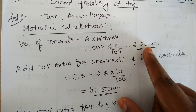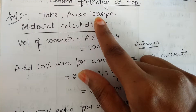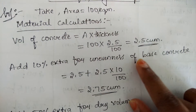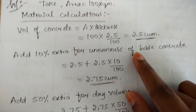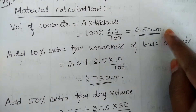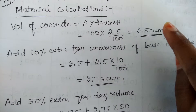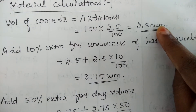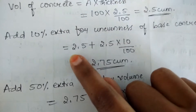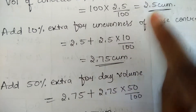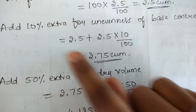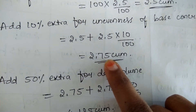That gives you the volume of concrete for an area of 100 m². Then for the same volume we have to add 10% extra for the uneven surface of the base concrete. That means 2.5 will remain as it is and extra 10% we have to find: 2.5 plus 2.5 into 10 divided by 100. On simplifying the whole thing we will get a value of 2.75 m³.